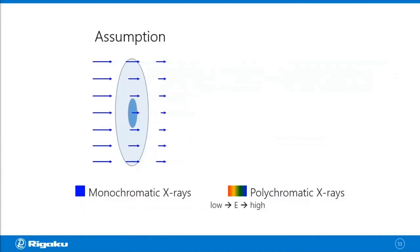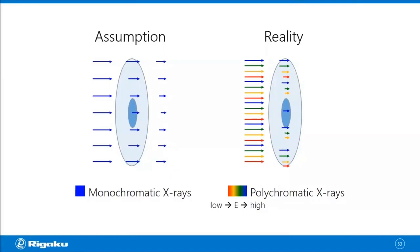But the reality is you have polychromatic x-rays coming in and higher energy x-rays can get through the sample better compared to lower energy x-rays. What that means is the energy distribution of those x-rays shifts towards the higher side as they go through the sample.